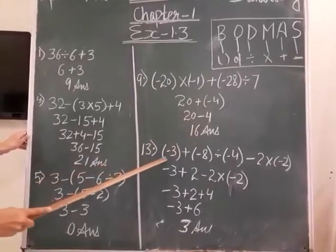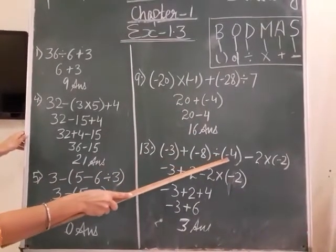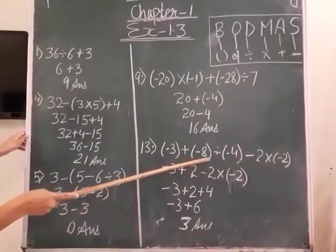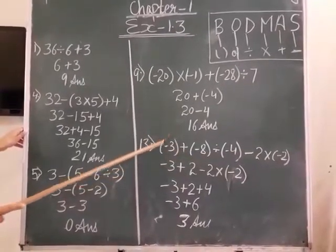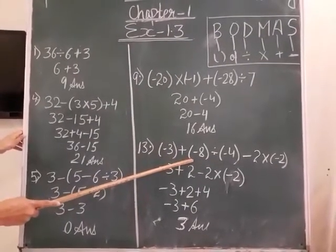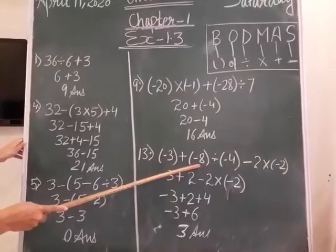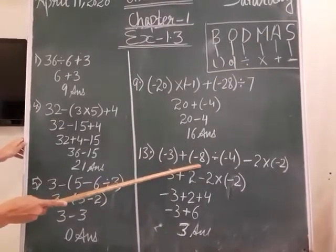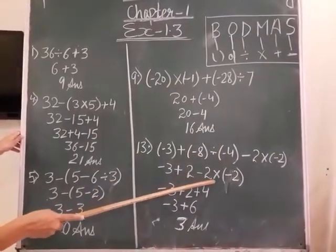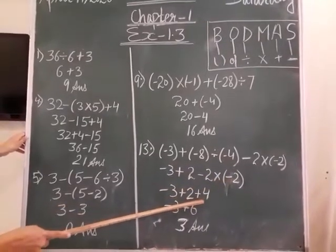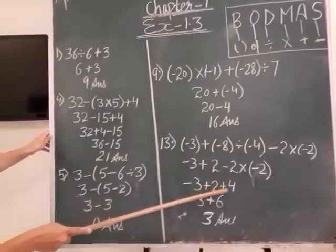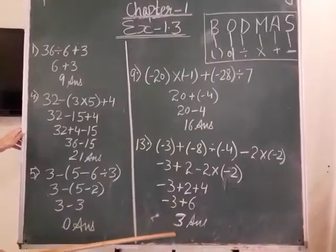Next is sum number 13: minus 3 plus minus 8 divide minus 4 minus 2 multiply minus 2. There are no separate grouping brackets here — the brackets only hold the negative integers. So following BODMAS, first we do division: minus 8 divided by minus 4 gives positive 2. Then multiplication: minus 2 multiply minus 2 gives positive 4. Then addition: both 2 and 4 are positive, so 2 plus 4 gives 6. Finally subtraction: 6 minus 3 gives the answer 3.